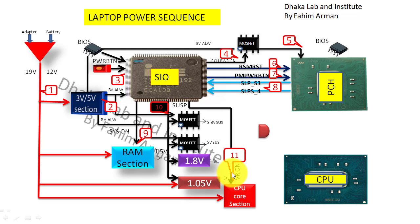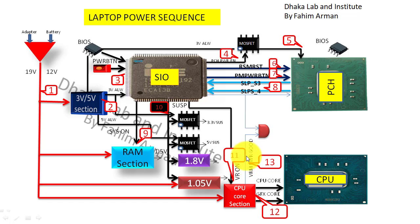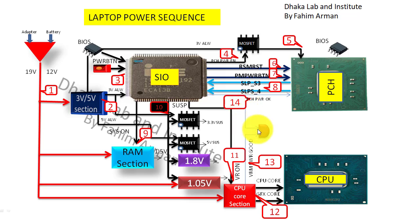Then SIO will provide a signal to the CPU core section — that is the BRN signal. It is a very important signal. When the CPU core section gets the BRN signal, the CPU core section will produce two signals: that is CPU core and GFX core, meaning the CPU core section is okay. Then there will be a comparator — BRN power good will go to that comparator on one side, and on the other side there will be PCH power okay.